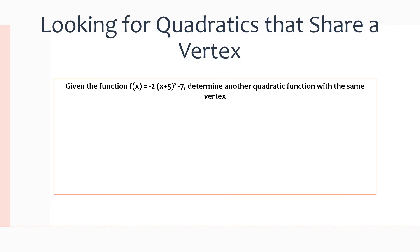Looking for quadratics that share a vertex. So given the function f(x) = -2(x + 5)² - 7, determine another function with the same vertex. The first thing we need to do is identify the vertex. The vertex is at (-5, -7), because the x value always switches sign.